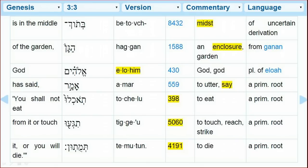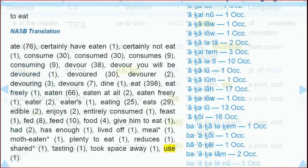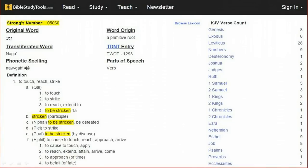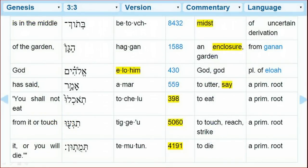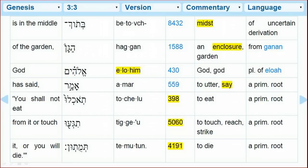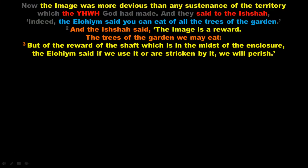The word translated as 'eat,' number 398, also means 'use.' The word 'touch,' number 5060, also means 'to be stricken.' And the word 'die,' number 4191, also means 'to perish.' So it says: 'The ELOHIM said if we USE it, or are STRICKEN by it, we will PERISH.' Genesis 3 verses 2 and 3 therefore read: 'And the ISHAH said, the IMAGE is a REWARD. The trees of the garden we may eat, but of the REWARD of the SHAFT which is in the MIDST of the ENCLOSURE, the ELOHIM SAID, if we USE it, or are STRICKEN by it, we will PERISH.'